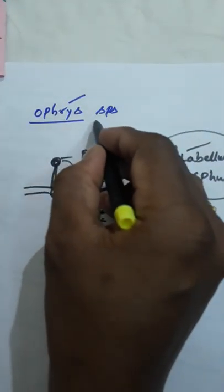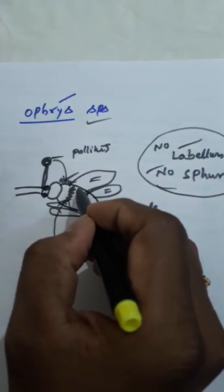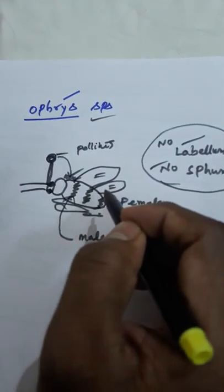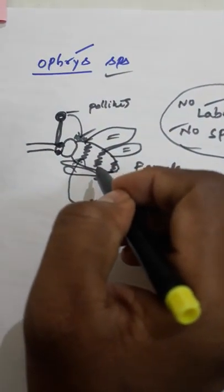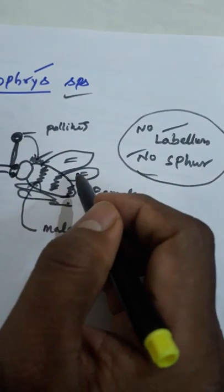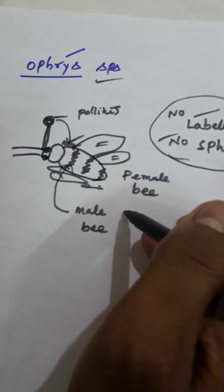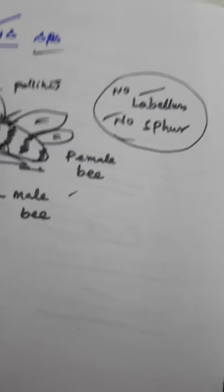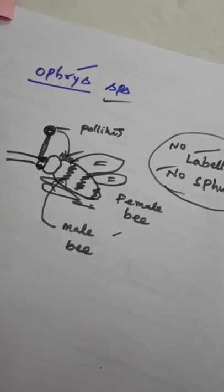It is the Ophrys species important. Ophrys species flowers are looks like female bee. That's why male bees are mate to that flower. The pollinium are touched to the backside of the insect and transferred to another flower. These pollinium are carrying out by male bee. This is the insect pollination in orchidaceae members.